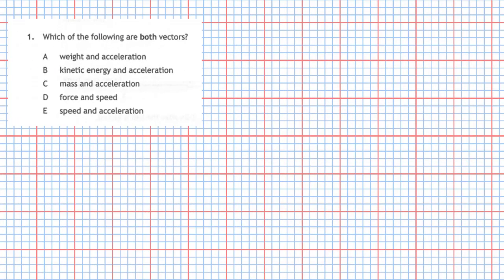Question 1 from section 1 of the 2019 National 5 Physics Examination: Which of the following are both vector quantities? We're given 5 pairs of quantities and we'll decide which one contains 2 vectors.